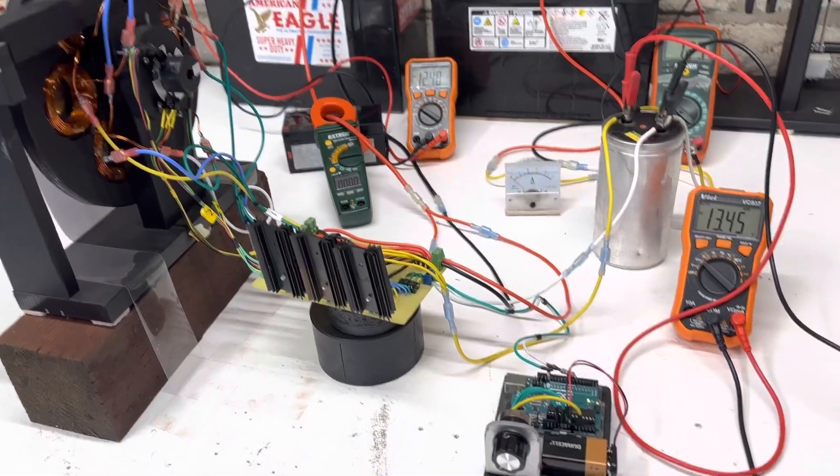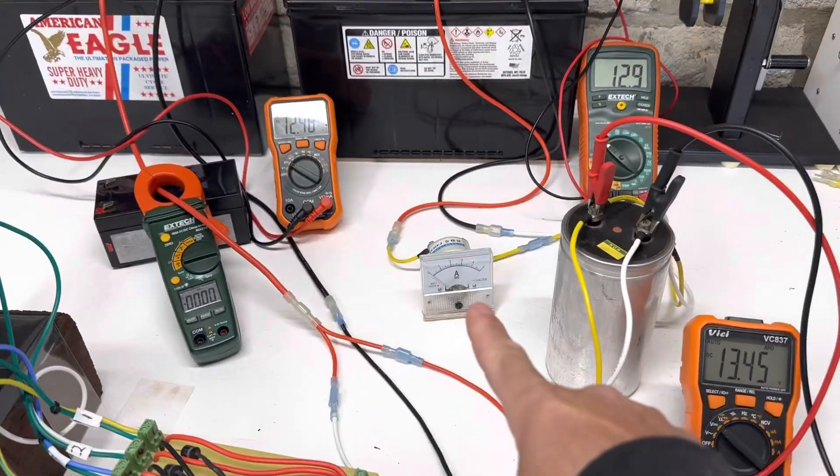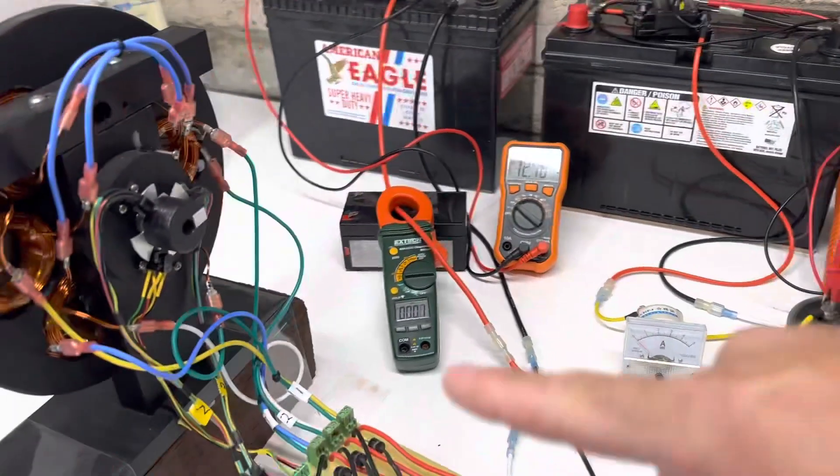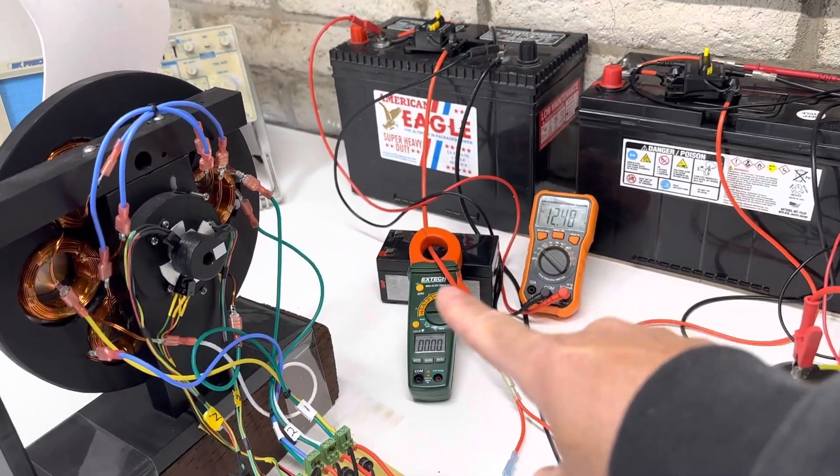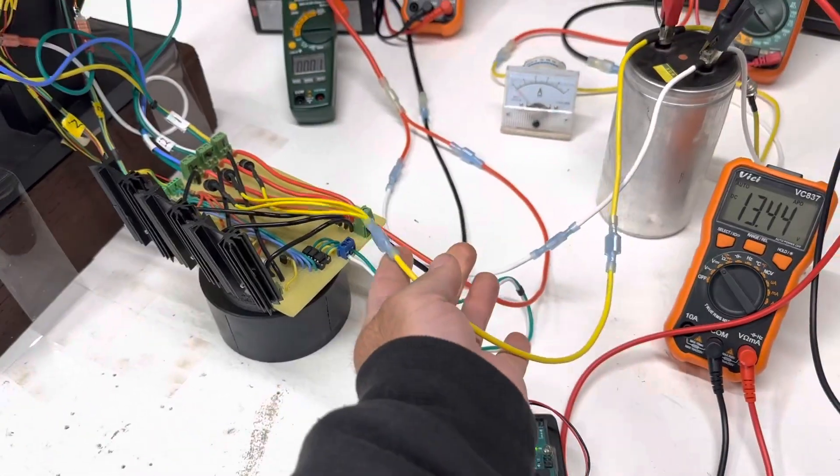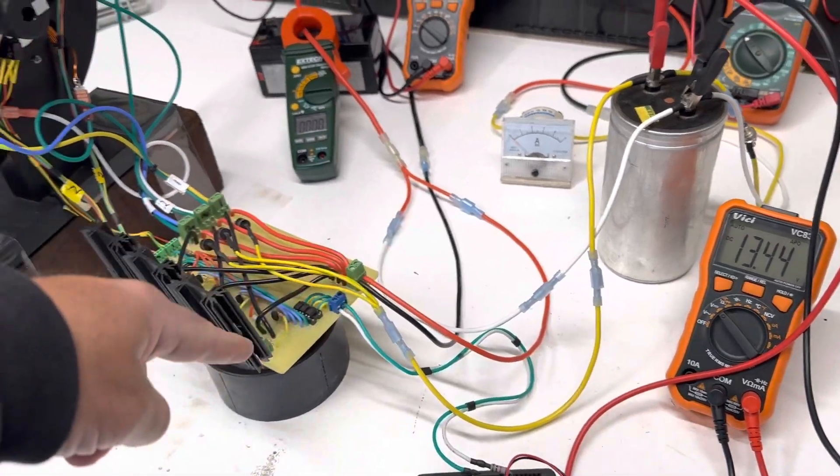We're just going to jump right in and start turning this thing up. So this is the output from the motor going into this battery. This is the run battery right here with the amp meter, and yellow is always output and white, and then you have red and black as the input.